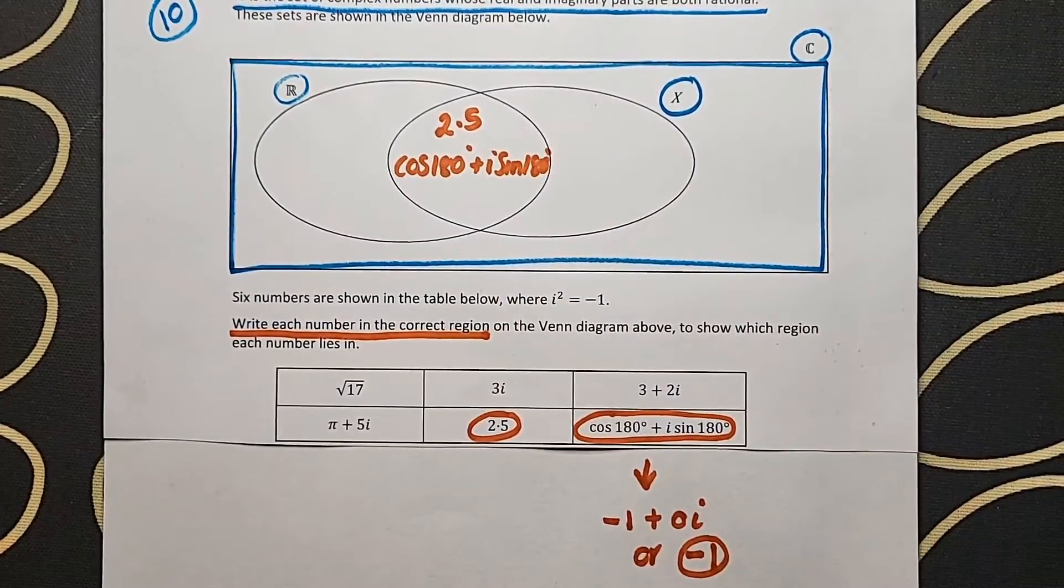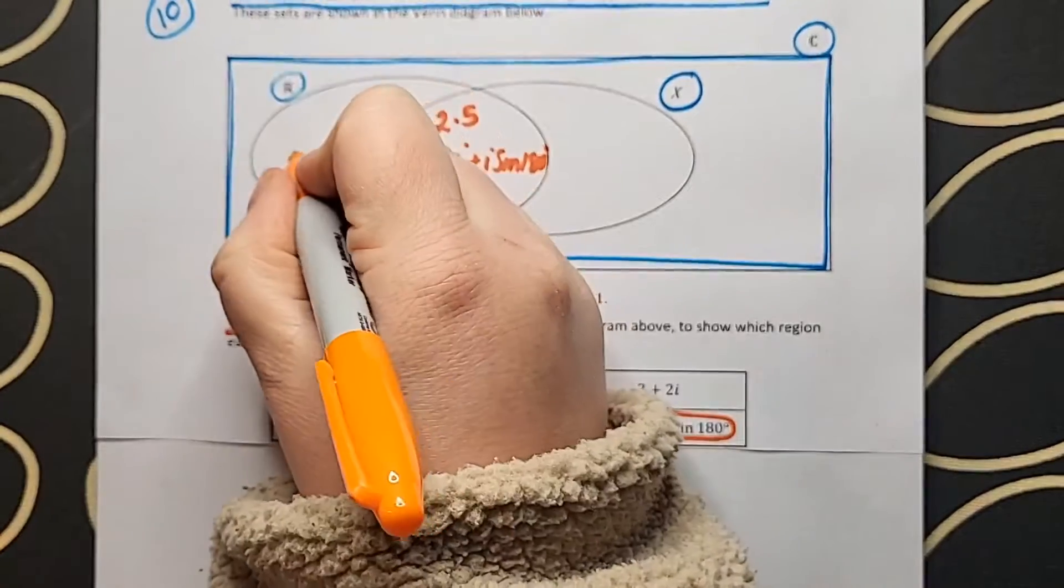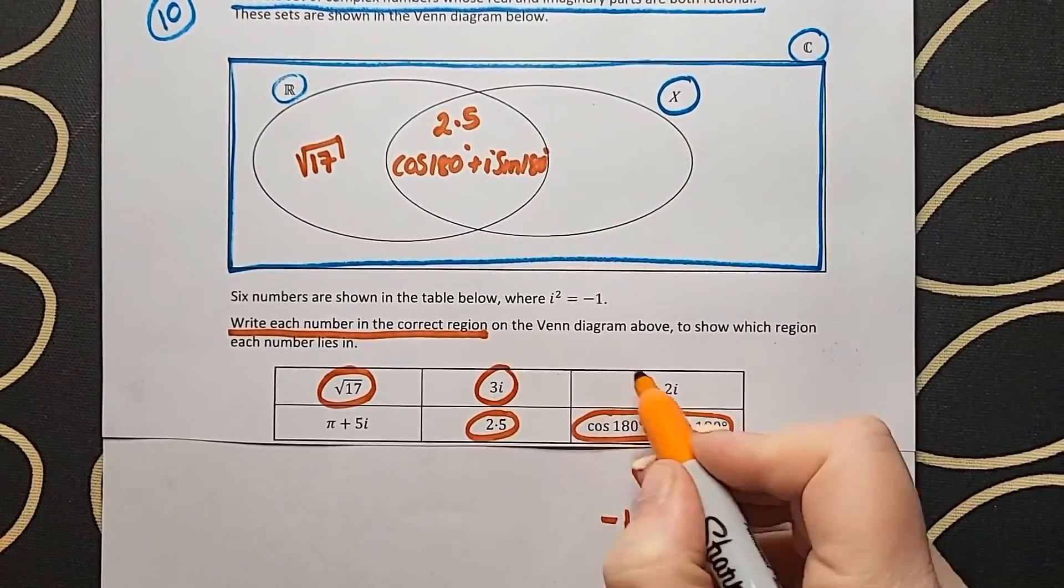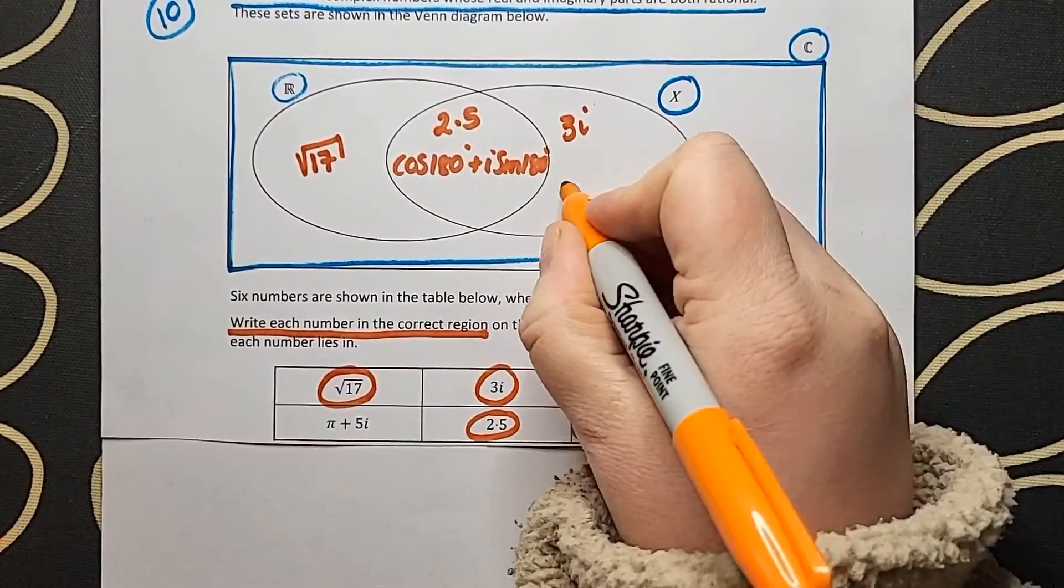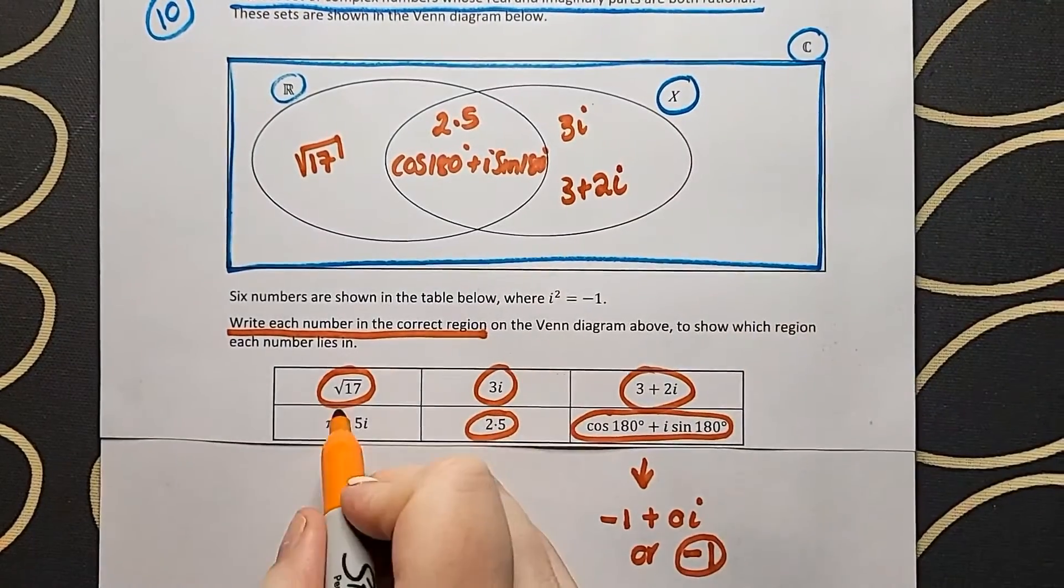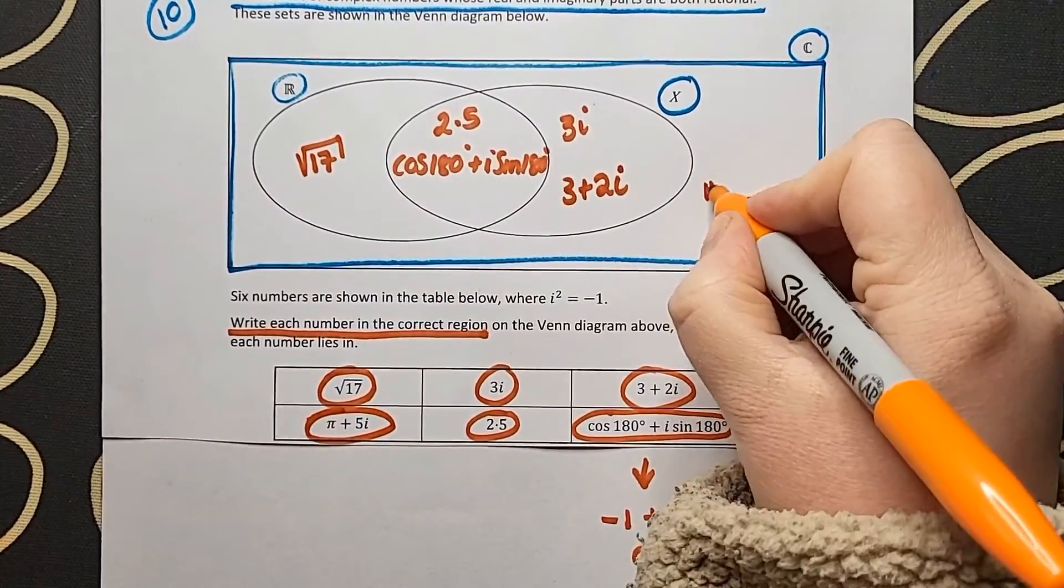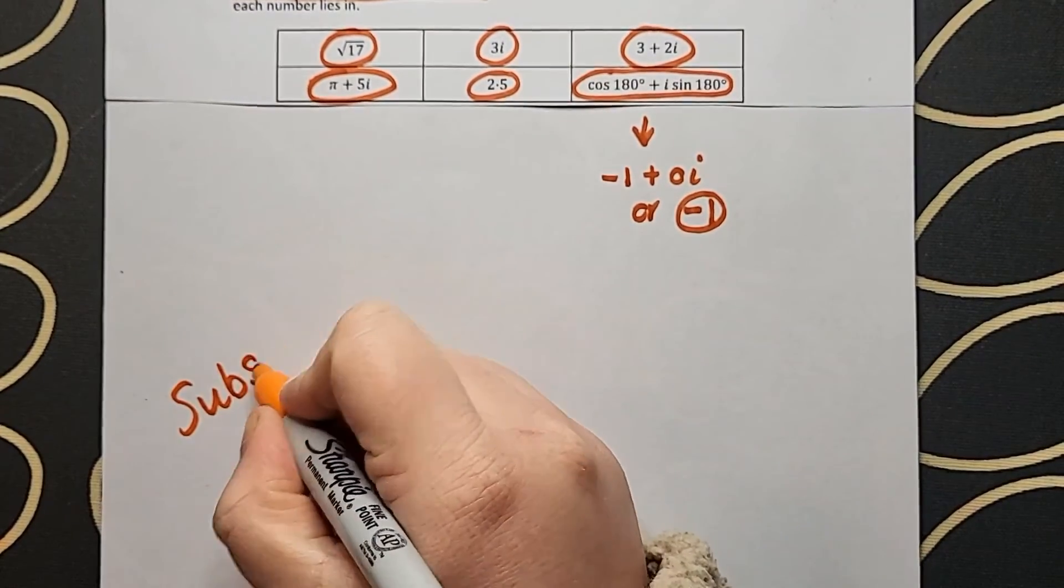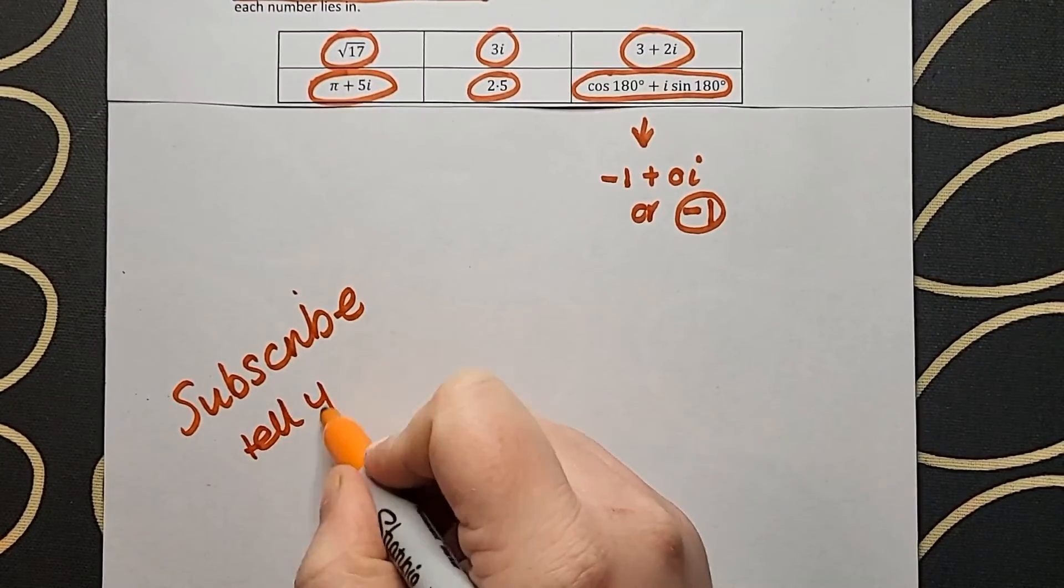Now I look to the left hand side where I have my real numbers, and root 17 is the only real number that can go in there. On the right hand side where I have a complex number with both rational parts, I got my 3i and my 3 plus 2i in there. Because pi is not rational, we have to put it outside the circles but inside the universal set.